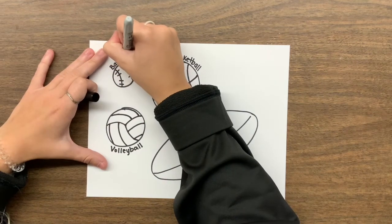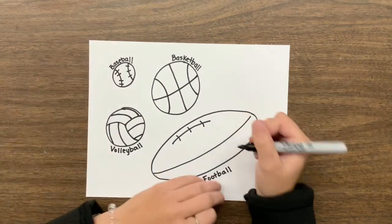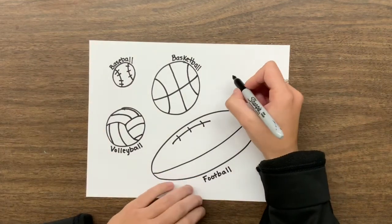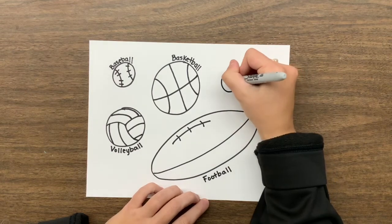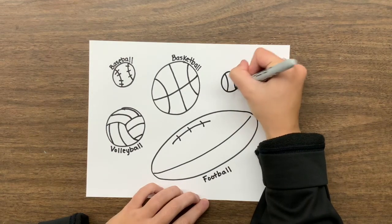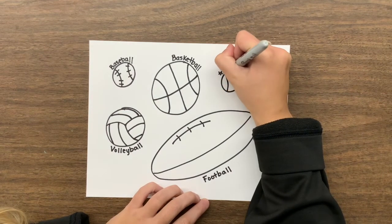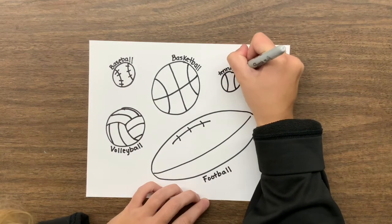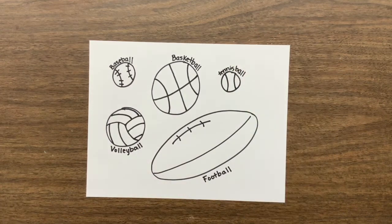I'm actually going to draw one more ball off to the side here - that'll be our tennis ball. This tennis ball looks a lot like the baseball with the same kind of lines, but it doesn't have the baseball stitching that holds it together. They're just lines that are on the ball. So there you have five basic balls that we use all the time in sports. Enjoy!